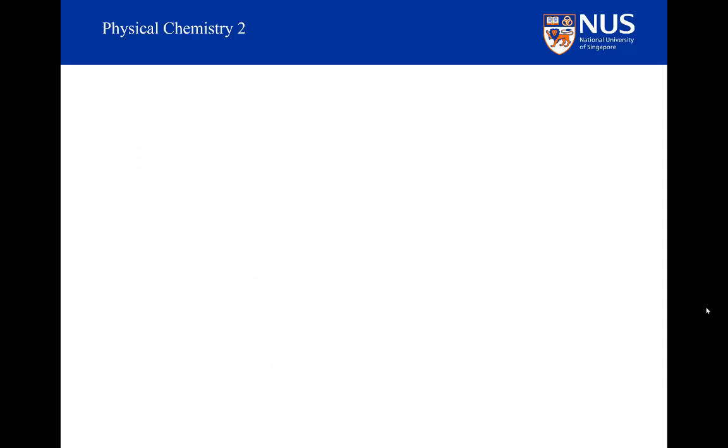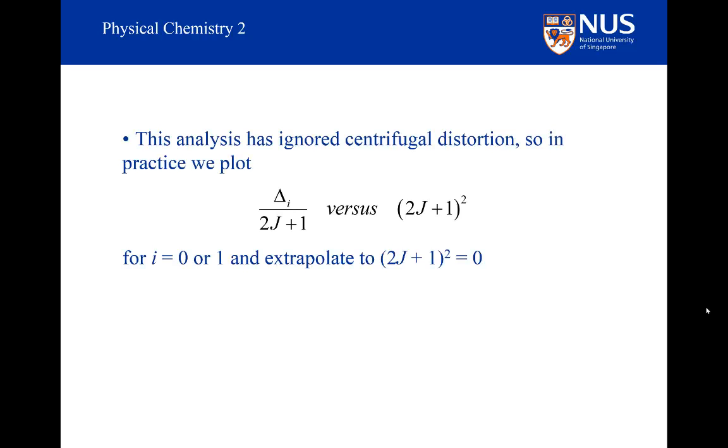In this analysis to determine B₀ and B₁, we ignored centrifugal distortion. We could have done the same analysis and taken into account centrifugal distortion. With a bit of messing around, you'll find that what you want to plot is Δᵢ over (2J plus 1), where i is 0 or 1 depending on which combination of R and P lines you want to use. It won't be a constant, but if you plot Δᵢ over (2J plus 1) versus (2J plus 1) squared, this is what you'll get. The intercept will be equal to 2Bᵢ minus 3Dᵢ. So if you're looking at the P(J plus 1) and R(J minus 1) transitions, then i will be equal to 0 and the intercept will be 2B₀ minus 3D₀, and the slope of the line will just be minus D₀ in this particular case.